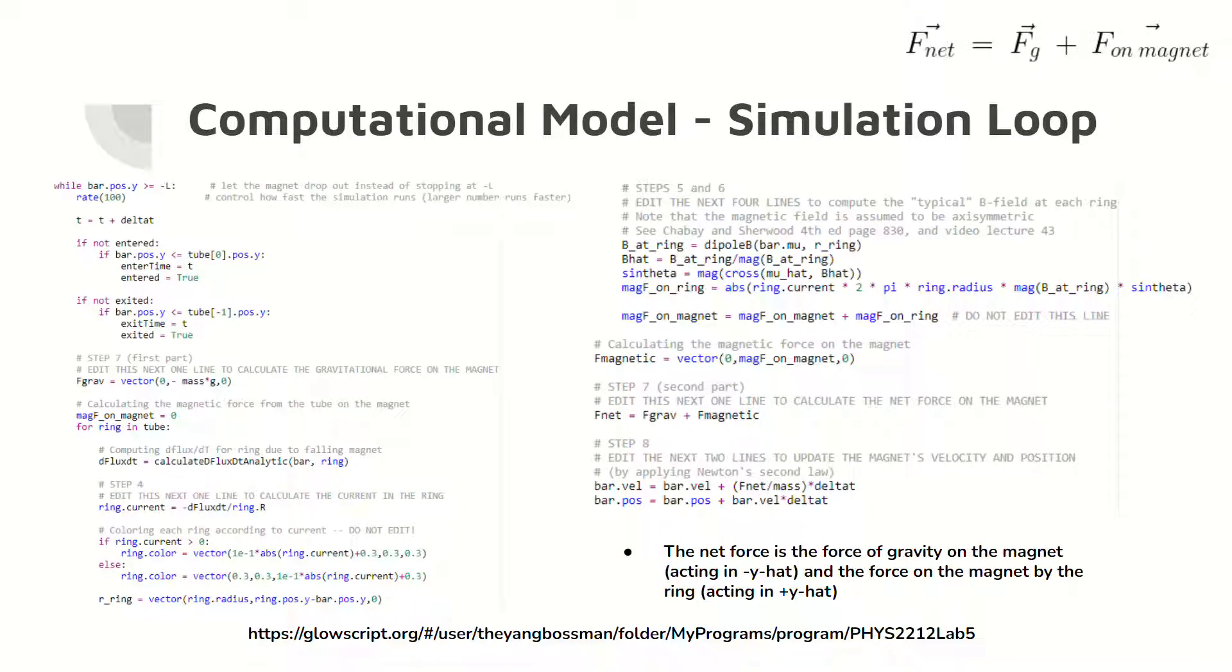Here is the code for the simulation loop, which calculates the force on the magnet from the loop and the force due to gravity to find the net force. The loop also updates the velocity and position of the magnet.